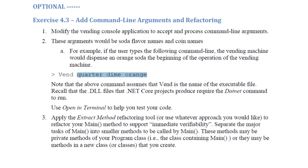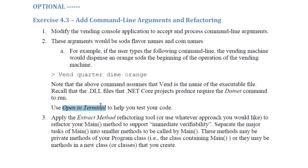Notice the order is not specified, so you should be able to put that in any order — specify the flavor first and then put in the money, or put in some of the money and then a flavor and then the rest of the money. Remember that .NET Core projects that produce a DLL can only be run using the .NET command, so keep that in mind as you test your code. You might want to use the open in terminal command to bring up something that operates like a command window from within Visual Studio.